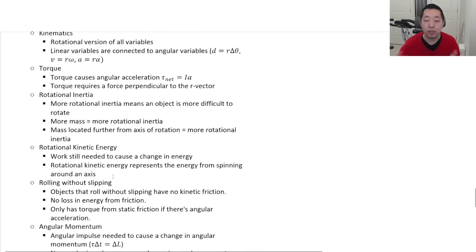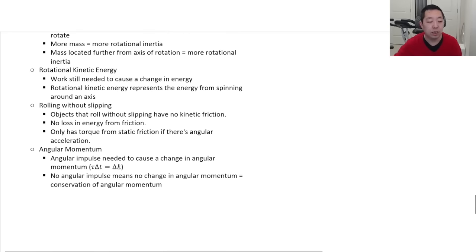Rolling without slipping. Whenever you hear rolling without slipping, what that means is there's no kinetic friction between the object and the surface. So when it rolls, it rolls nice and smoothly and it doesn't rub like that. So there's no kinetic friction. And so there's no loss in energy from that friction. And then it may have a torque from static friction on there. There may be static friction if there is angular acceleration happening. So if it's moving at a constant speed, no angular acceleration. As it's rolling, there's no torque necessary. If it's rolling down a hill or up a hill, there is an angular acceleration because the angular velocity is changing. And thus there may be a torque from static friction.